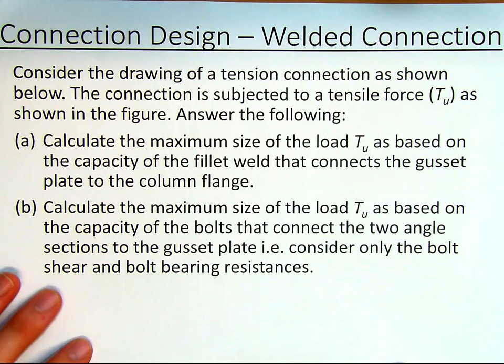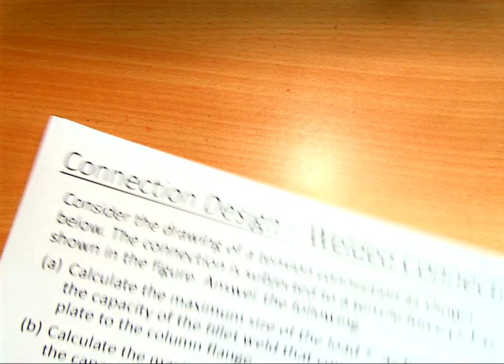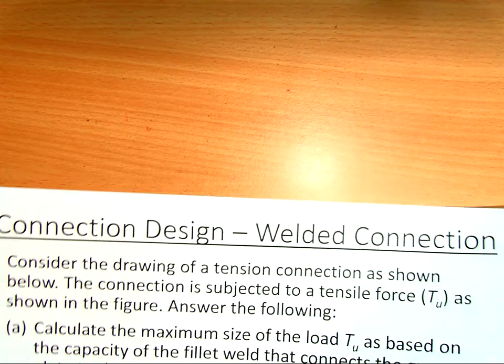Consider the drawing of a tension connection as shown below. The connection is subject to a tensile force Tu as shown in the figure. Answer the following: Calculate the maximum size of the load Tu as based on the capacity of the fillet weld that connects the gusset plate to the column flange. And then calculate the maximum size of the load Tu as based upon the capacity of the bolts that connect the two angle sections to the gusset plate, i.e. consider only the bolt shear and bolt bearing resistances.